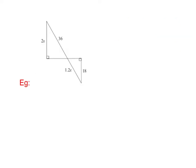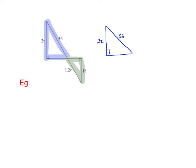Now we're going to determine X given that these triangles are similar. I'll highlight each triangle and redraw them so they're oriented the same way. The first triangle has sides 2X and 36, and the second triangle has sides 18 and 1.2X. You can solve for X because we know they are similar triangles.